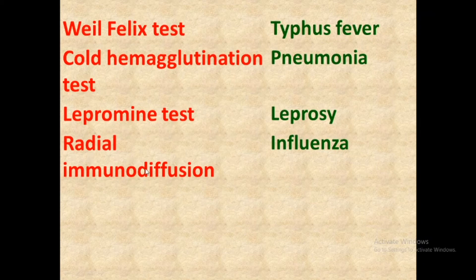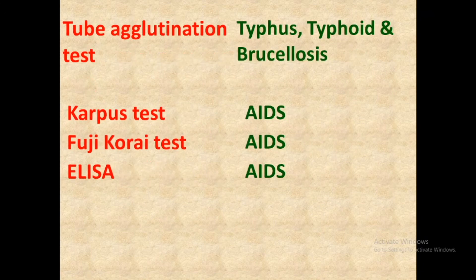Radial immunodiffusion is used for the diagnosis of influenza — this is a very important test. The tube agglutination test is used for the diagnosis of typhus, typhoid, and brucellosis.